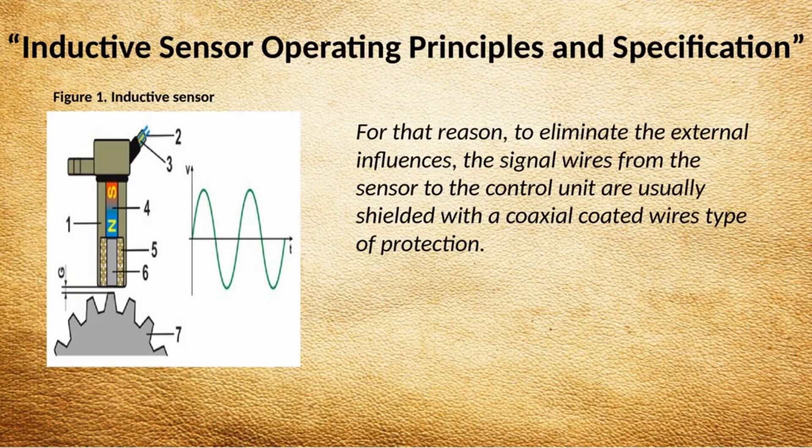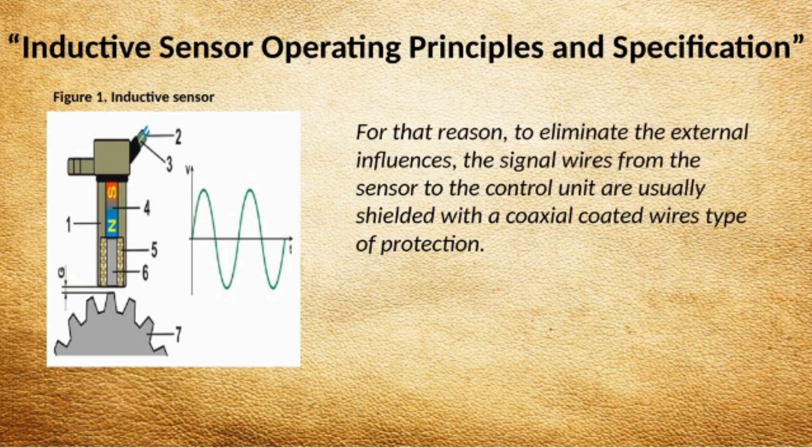For that reason, to eliminate external influences, the signal wires from the sensor to the control unit are usually shielded with a coaxial-coated wire type of protection.